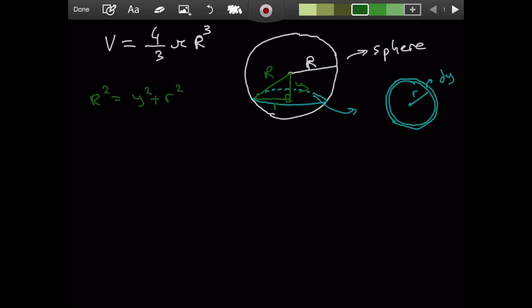So, when I do that, let's see what we get. We will say y squared is equal to r squared minus little r squared. But what is the point?